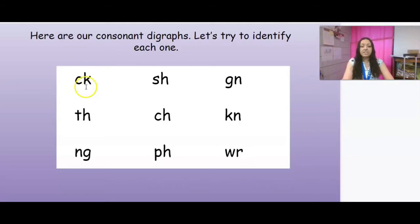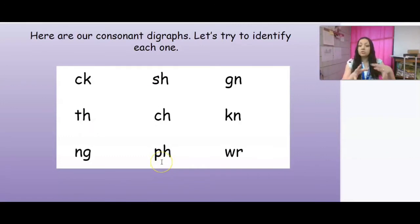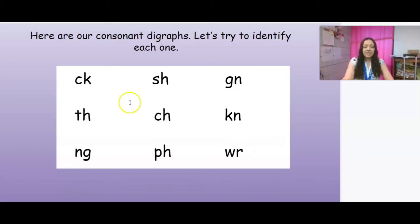We know that when we see C-K or N-G, they're going to be towards the end of a word. We're not going to start a word with C-K — C-K is an ending. T-H, S-H, C-H, and P-H are digraphs that can be seen in the beginning, middle, and end. And then G-N, K-N, and W-R — those are ghost digraphs.